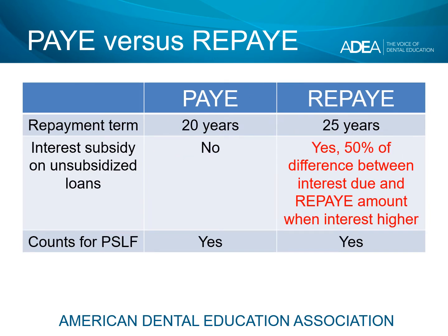The repayment term with PAY is shorter at 20 years. REPAY is 25 years for anyone with borrowing during graduate and professional school, which is certainly the case for dental school graduates. Notice the interest subsidy on unsubsidized loans — this is extremely important, and actually one reason many borrowers who are recent graduates with significant debt may be looking at REPAY.